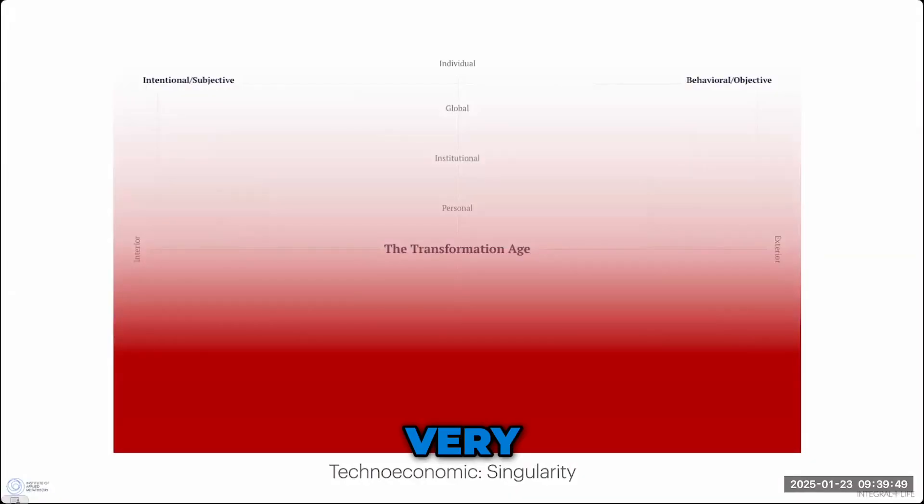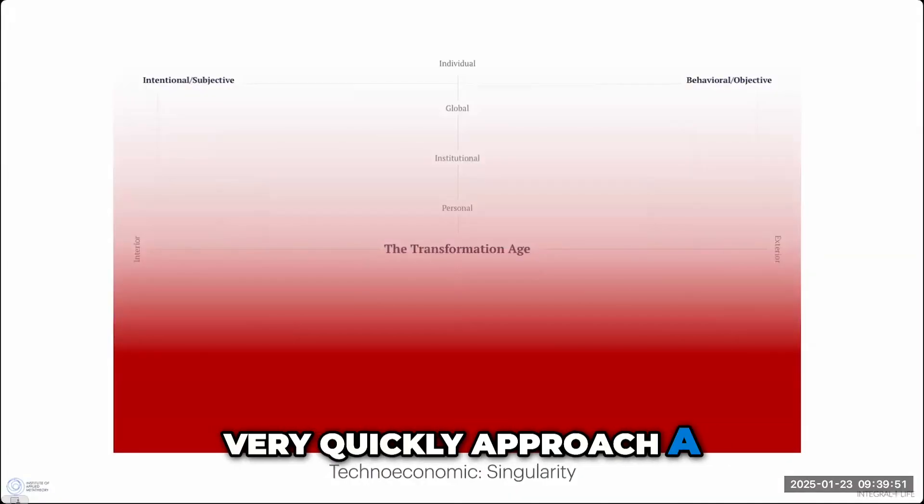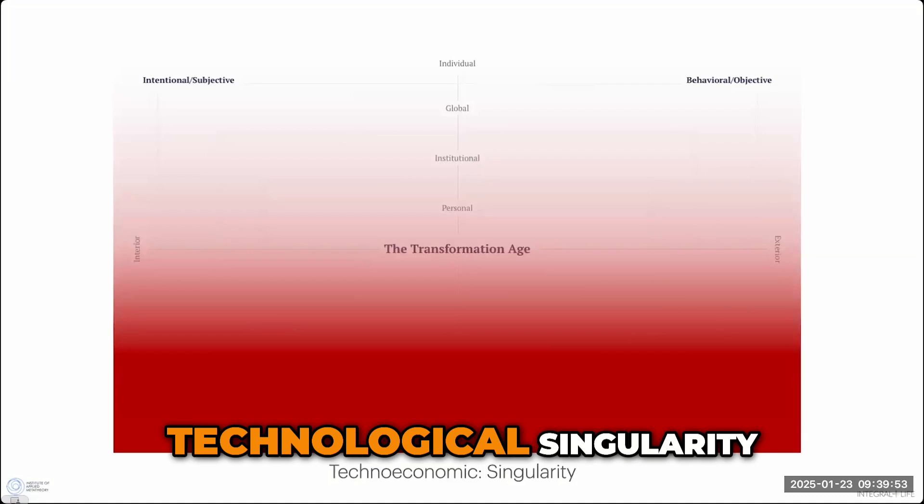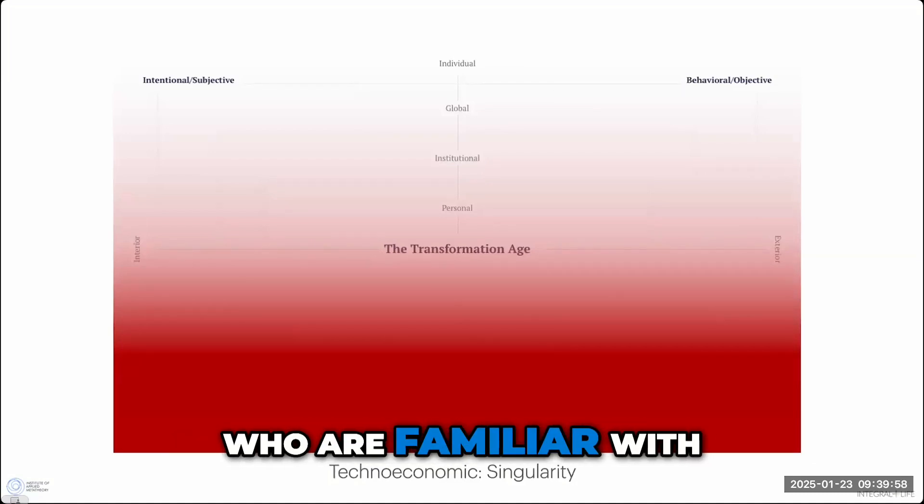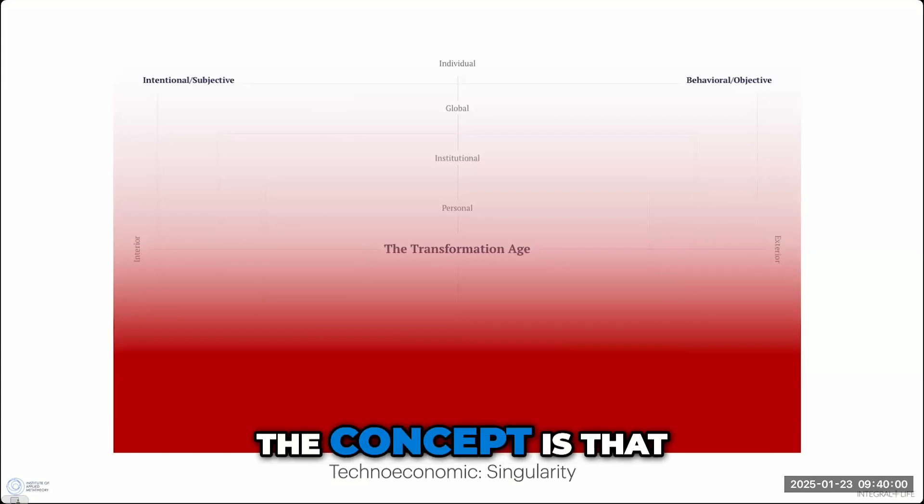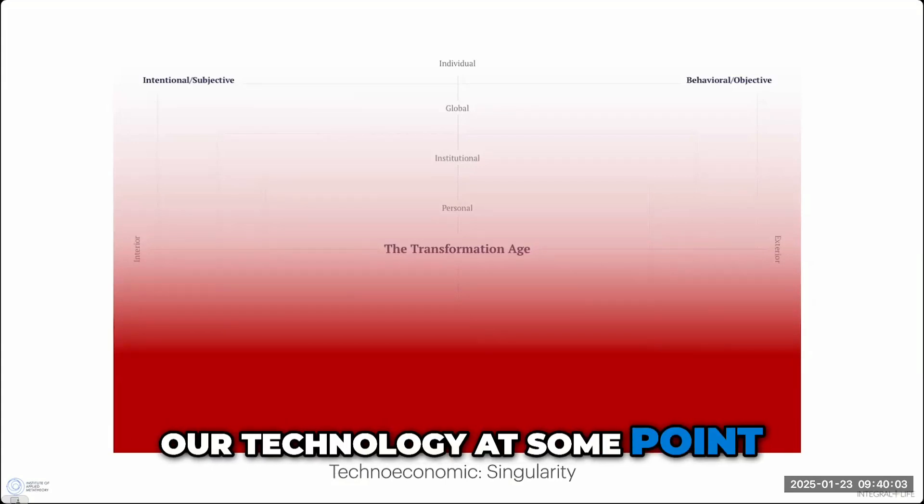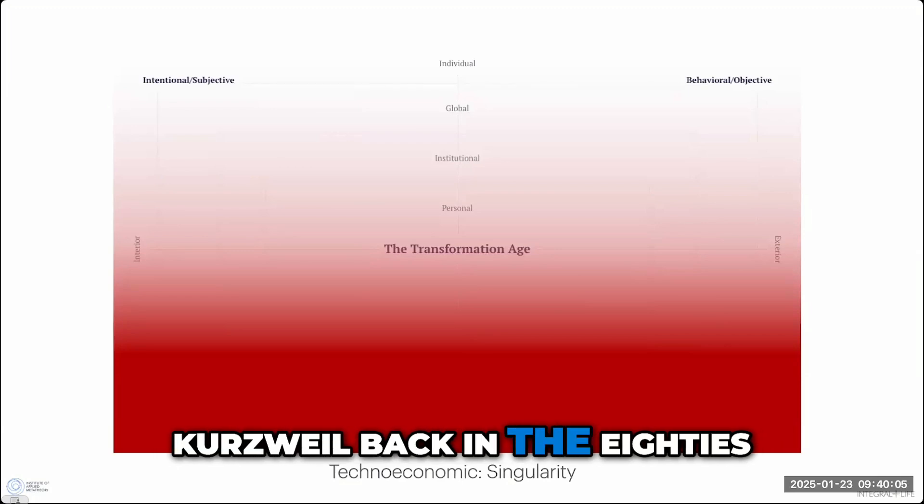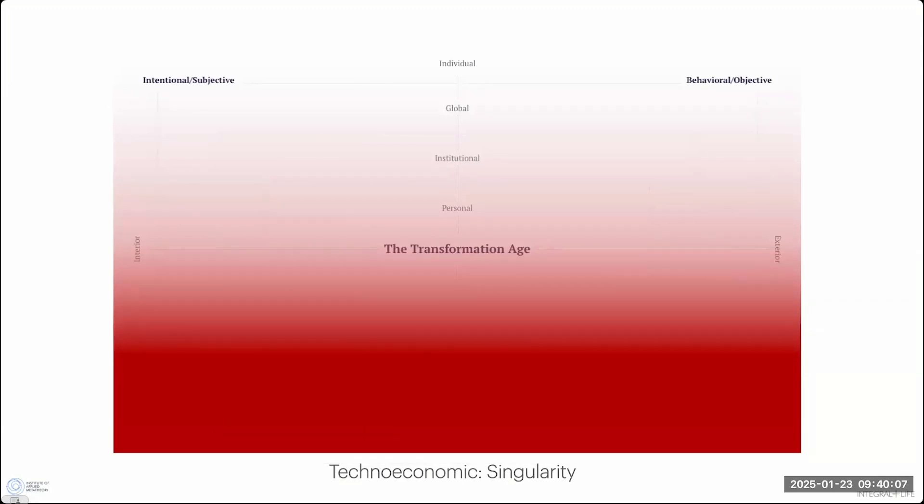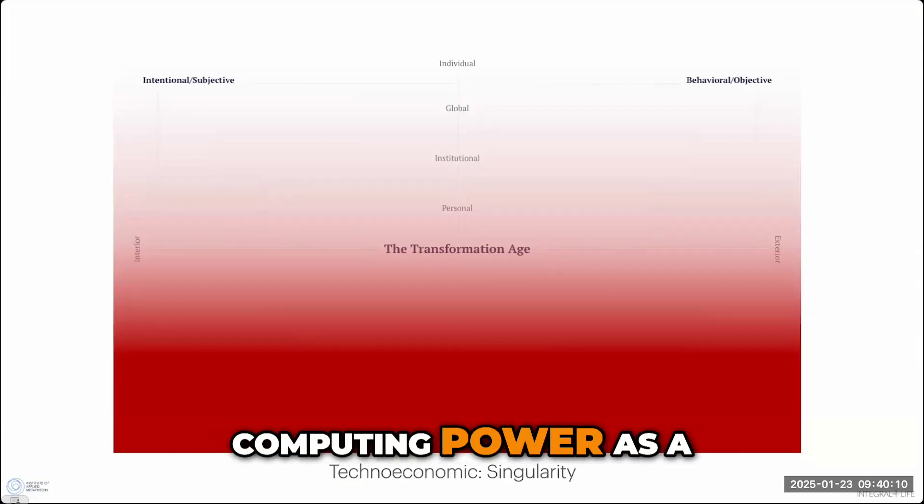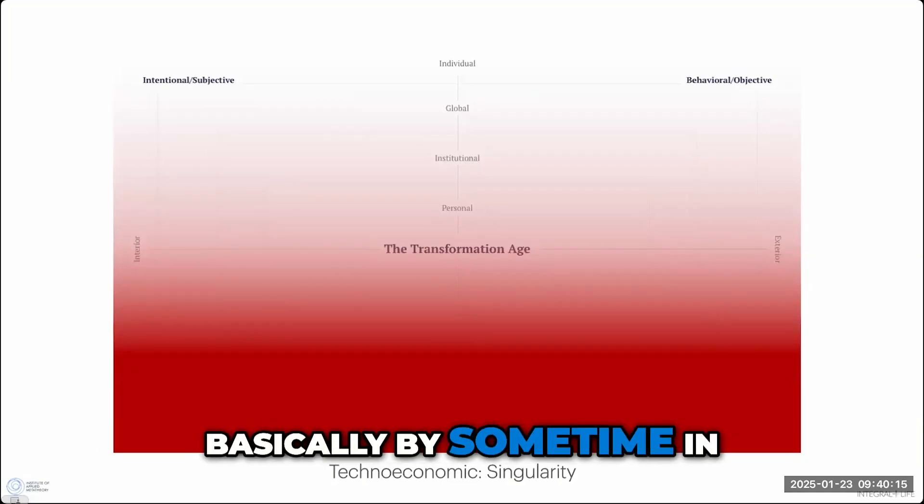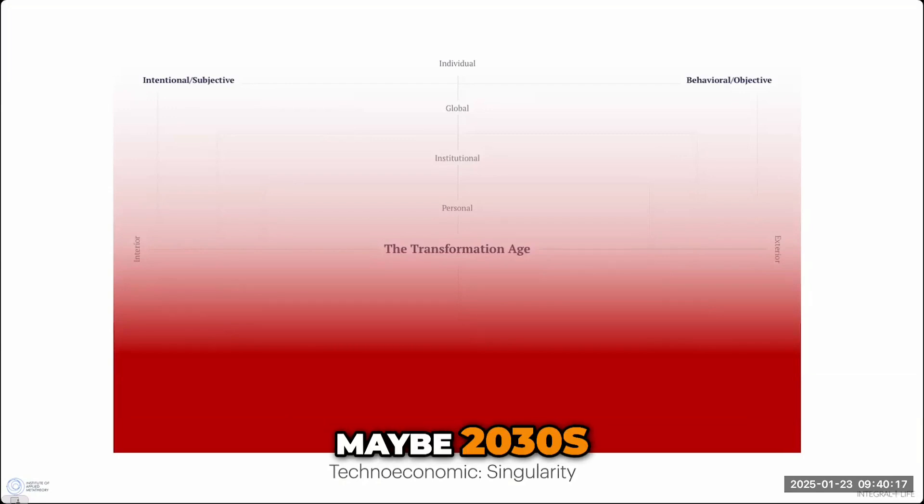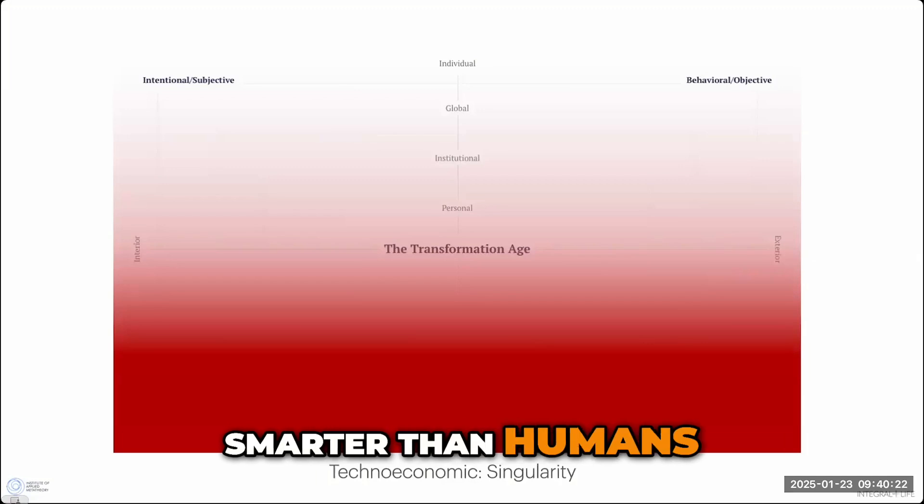We very, very quickly approach a technological singularity. For those of you who are familiar with the singularity, the concept is that our technology at some point—this was predicted by Kurzweil back in the 80s because he could look at basically the growth of computing power as a logarithmic function and project it out and say, okay, well, basically by some time in the 2020s or maybe 2030s, we're going to end up with computers that are able to get smarter than humans.